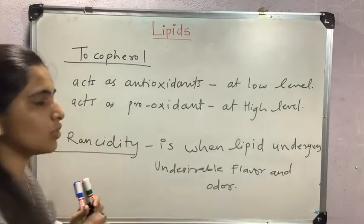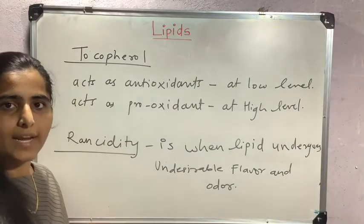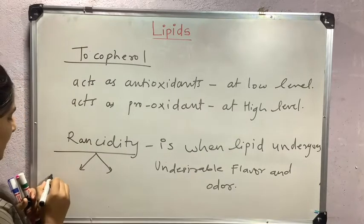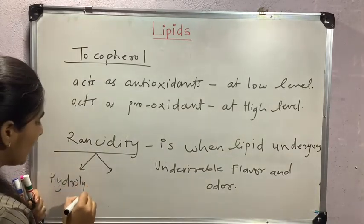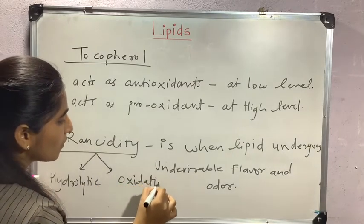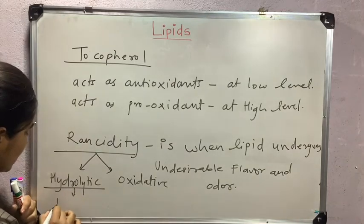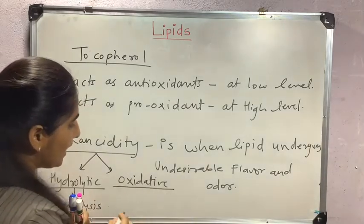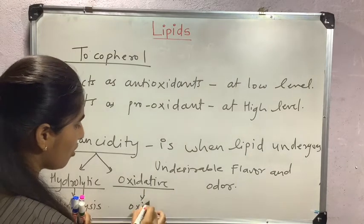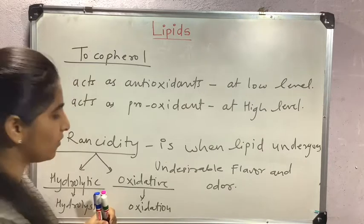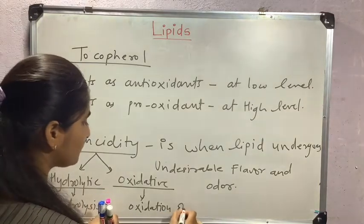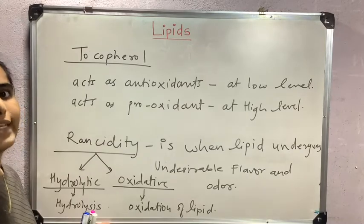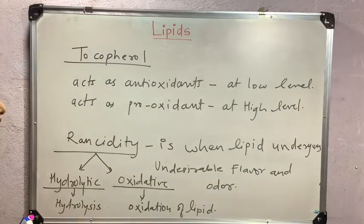Rancidity is of two types: hydrolytic rancidity and oxidative rancidity. As the names suggest, hydrolytic rancidity is the hydrolysis of lipid, while oxidative rancidity is the oxidation of lipid. The causative agent for oxidative rancidity is oxygen, while causative agents for hydrolytic rancidity are water, acids, bases, and enzymes.